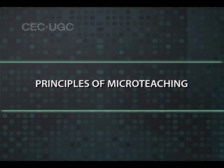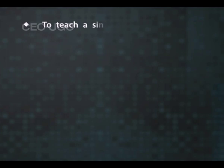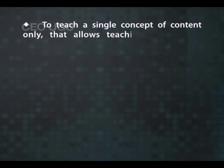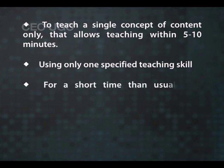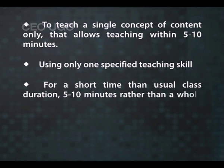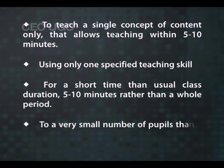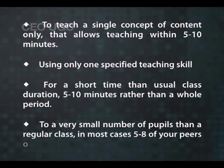Principles of micro-teaching. The very name of micro-teaching implies that it is a microscopic, small version of teaching in comparison to the usual process of teaching. As a teacher training technique, micro-teaching requires the teacher trainee to teach a single concept of content within 5 to 10 minutes using only one specified teaching skill, for a short time rather than a whole period, to a very small number of pupils — in most cases 5 to 8 peers or 5 to 10 pupils. The first principle of this technique is the micro element in terms of class time, scope of content and time frame.